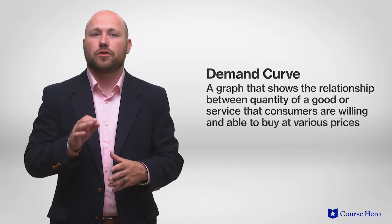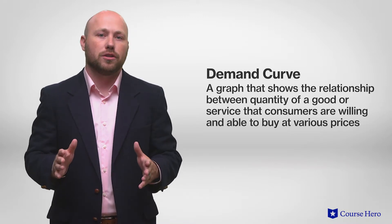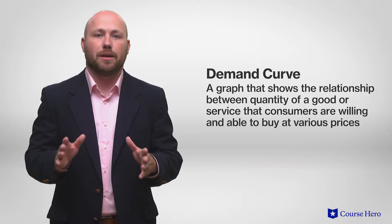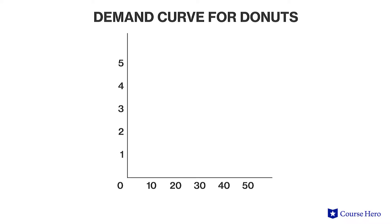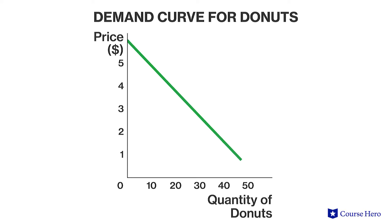The market demand can be represented by a demand curve, which is a graph that shows the relationship between the quantity of goods and services consumers are willing and able to buy at various prices. The demand curve is a lot like a demand schedule, but over a continuous span instead of at a set of particular price points. The vertical axis indicates the possible prices, and the horizontal axis indicates the corresponding quantities demanded. There's an inverse relationship between price and quantity demanded, and thus the demand curve has a downward or inverse slope.